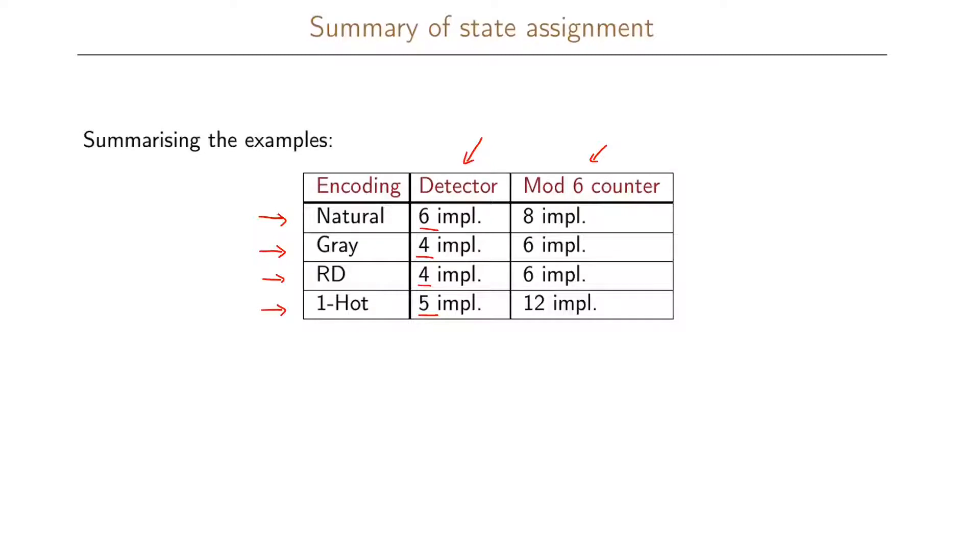It is clear here that the state assignment strategy that we're using will affect the number of implicants that we have in our realization of the problem. All of these realizations, even though they have different implicants, realize the same problem with the same properties, and they are all minimal in our definition of minimal.